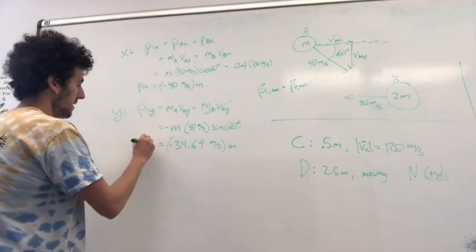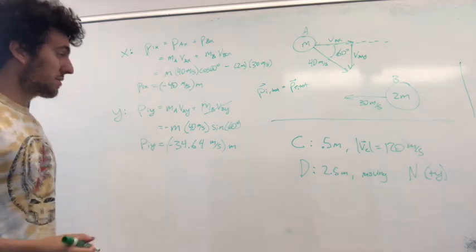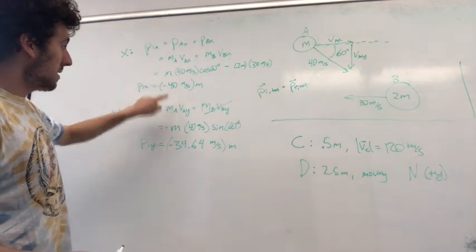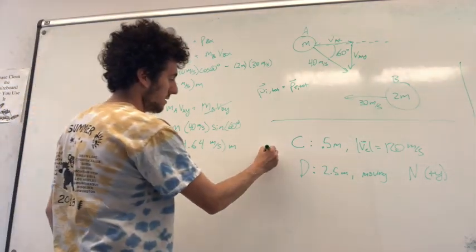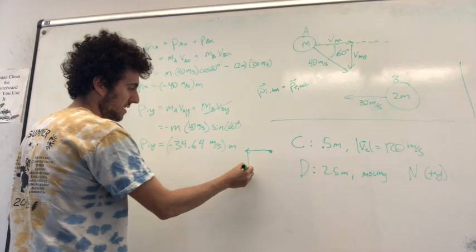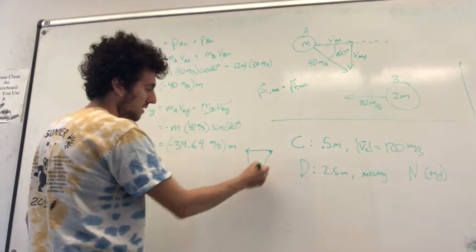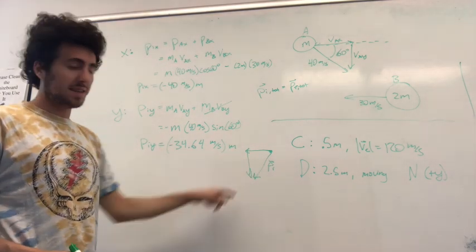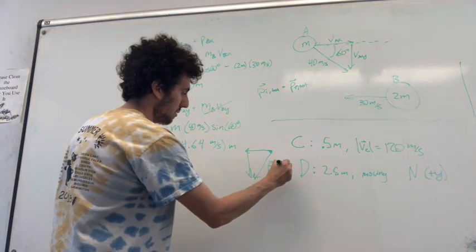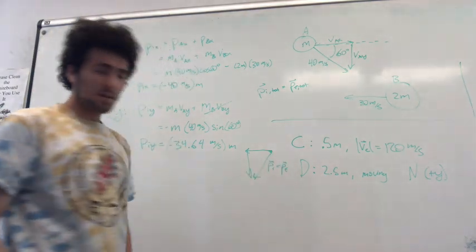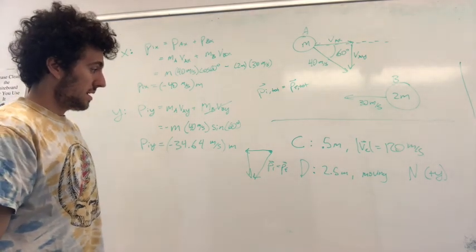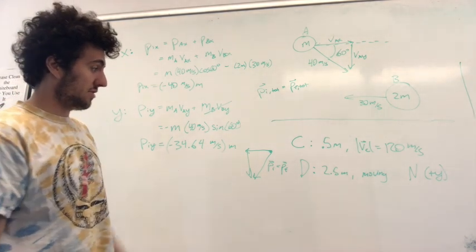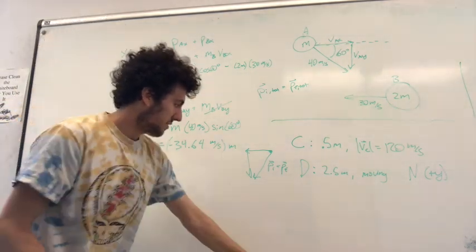So now we have our initial momentum in the x and the y direction. Let's plot that out and see what it is. We have both negative components, so here's our P initial x, here's our P initial y to the left and down. These are not to scale, but we know our total momentum is pointing down and to the left, which also means our final momentum is going to be pointing down and to the left. So let's see what we know about our situation based on the information in the problem.